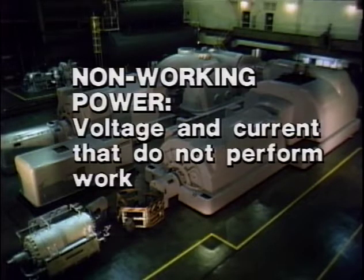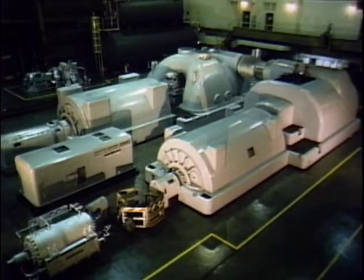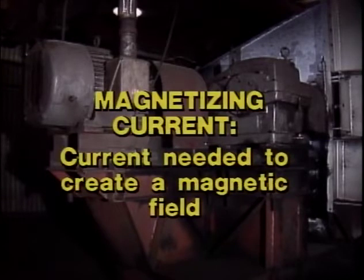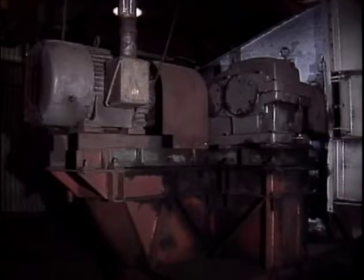Non-working power is voltage and current that do not perform work. Again, a key factor is what the current is used for. Some devices do not use all the current that they draw to perform useful work. For example, an induction motor needs a certain amount of current called magnetizing current to create a magnetic field in the motor. The magnetizing current does not perform work. Only after the magnetic field is created by non-working magnetizing current can working current operate the motor and perform work.